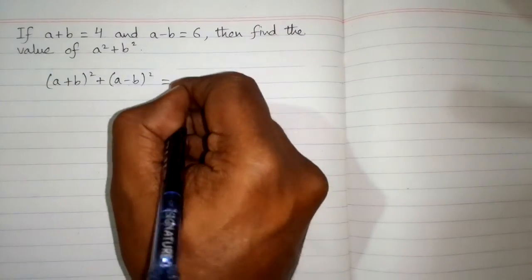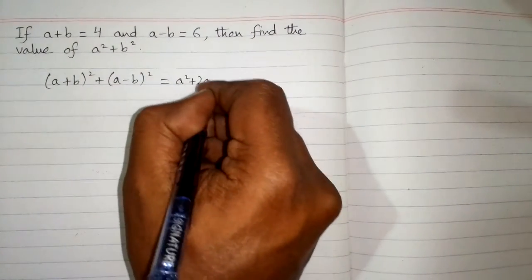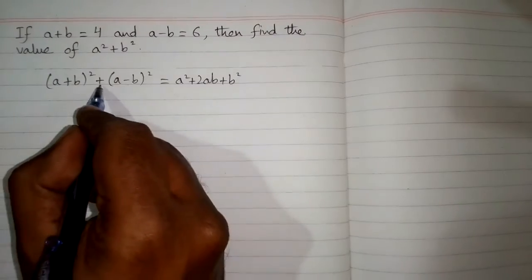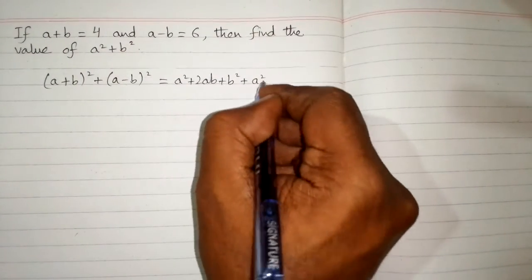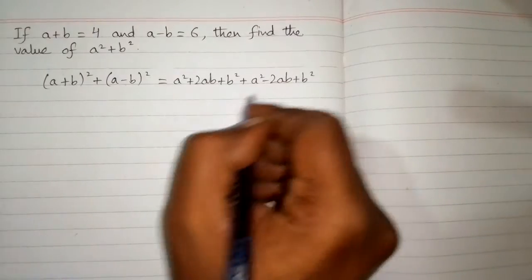a plus b whole square is equal to a square plus 2ab plus b square plus a minus b whole square is equal to a square minus 2ab plus b square.